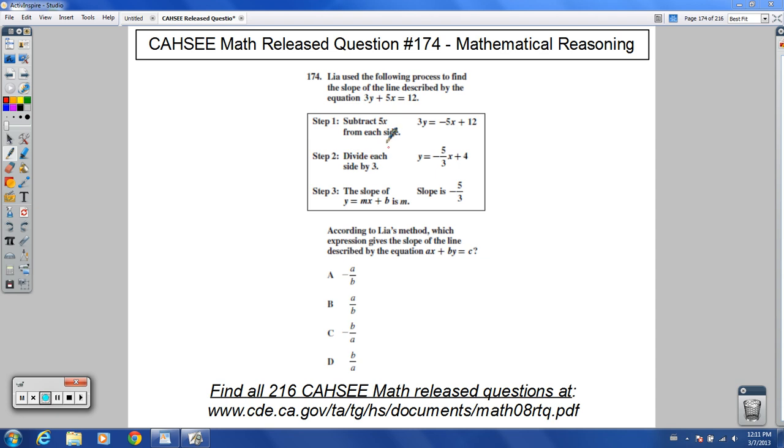Step two, dividing each side by three. It looks like it yields you that. So dividing here by three, three, and three, that would all reduce down to this. In step three, it says the slope of y equals mx plus b is m. So that's slope intercept form right there. That seems legit. That makes sense. The number in front of the x is our slope value.